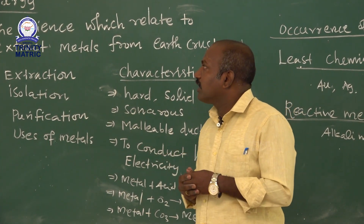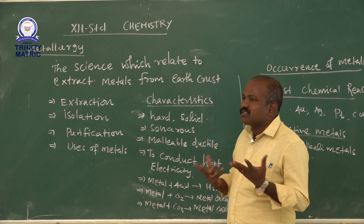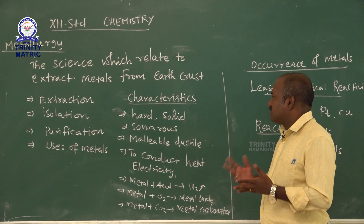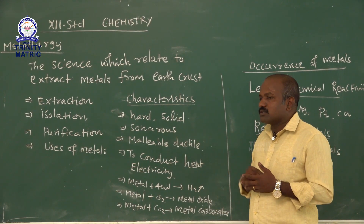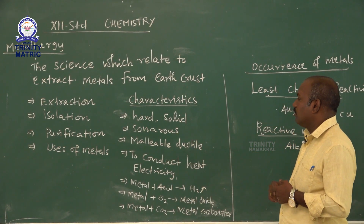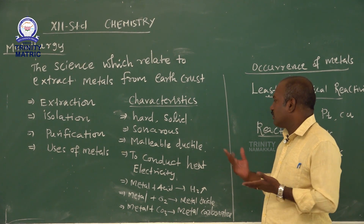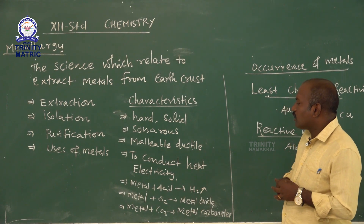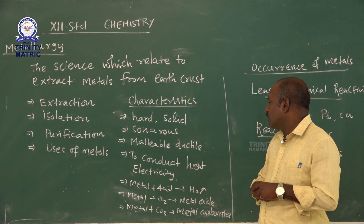The basic characteristics of metals are hard nature, solid nature, and sonorous type. Sonorous means when you strike the metal surface, it will produce a sound — that is the sonorous character. Then malleable and ductile: malleable and ductile means it is the flexibility character, metals converted into sheets and wires. That is the main character of metals. Metals also conduct heat and electricity, transferring heat from one part to another end.